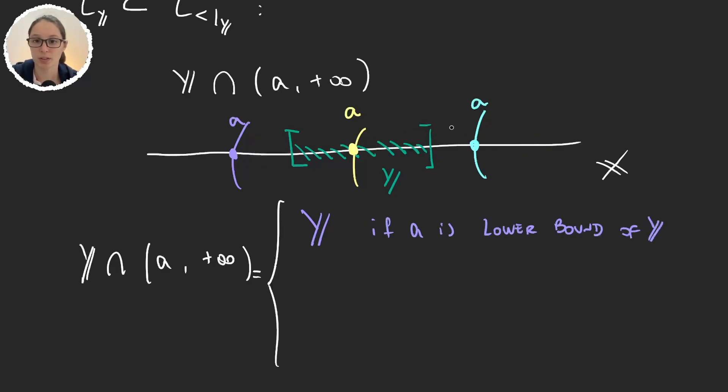And let me say if A is a lower bound of Y. If we were on this other situation, then the intersection would be the empty set. And in this case, A is an upper bound.